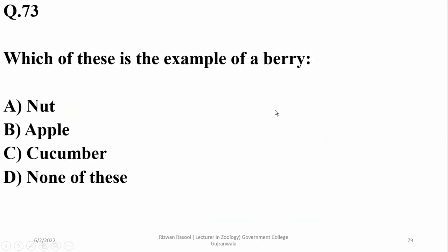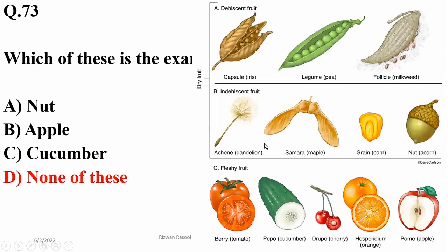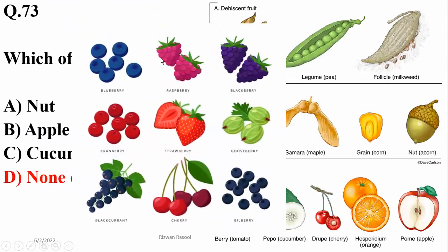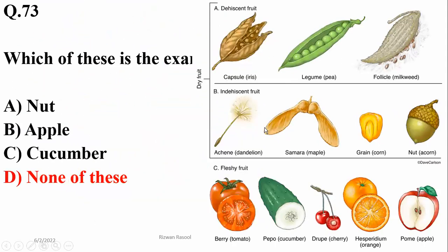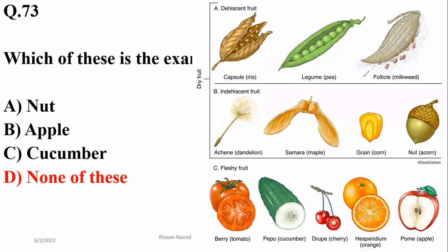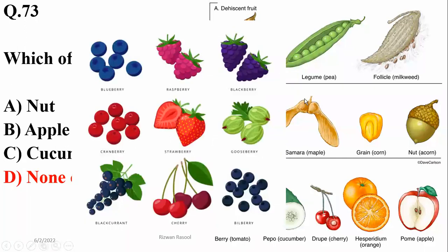Number 73. Which of these is an example of a berry? None of those mentioned in the options is classified as a berry. Berries contain a variety of fruits. Others in the list — nut, apple, and cucumber — are different fruit types: cucumber is a pepo fruit, apple is a pome, and nuts are achenes. So the right option is none of these.